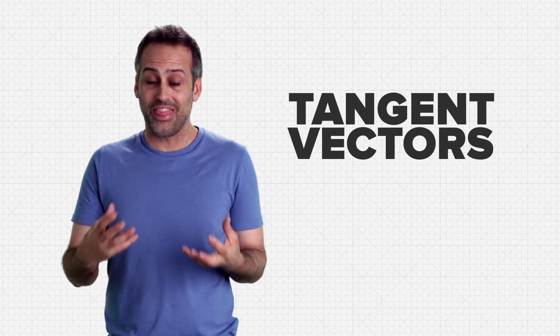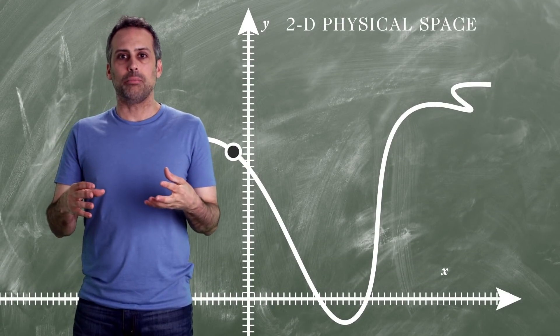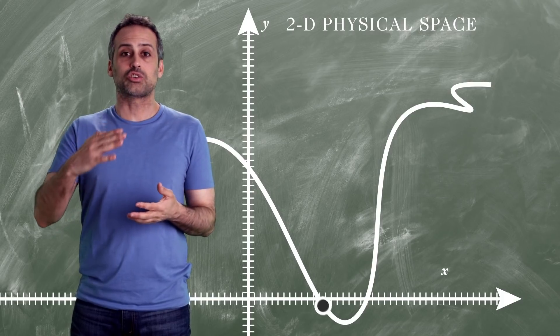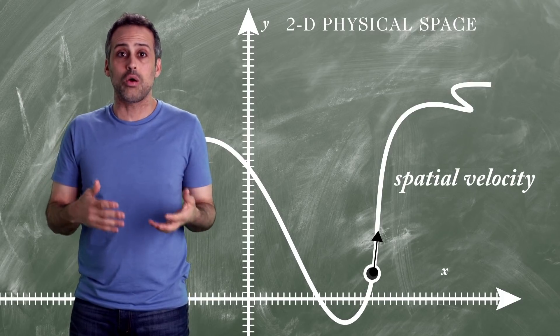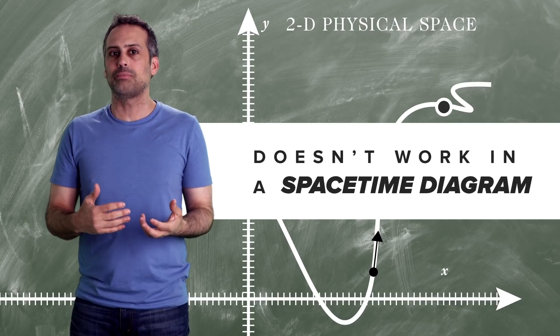I want to wrap up by going back to tangent vectors for a second, because I haven't told you yet what they represent physically. In a more standard drawing of motion over time, like what you might see in a physics 101 class, tangent vectors to trajectories represent velocities, how fast you're going and in what direction. But that interpretation doesn't work on a spacetime diagram.